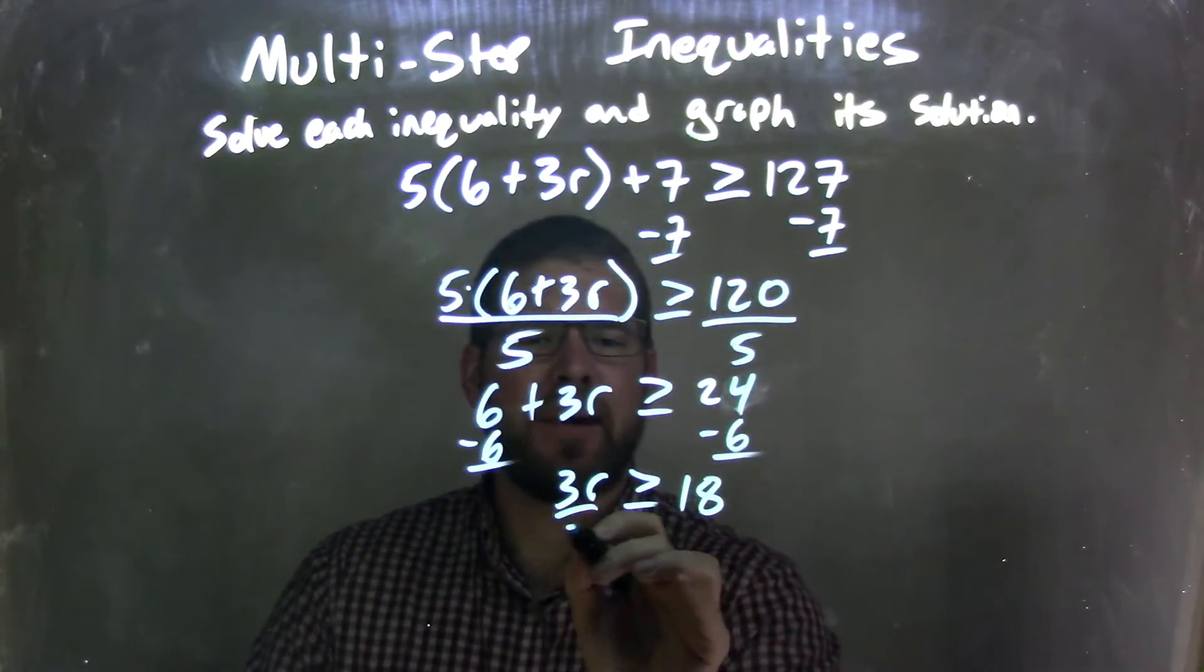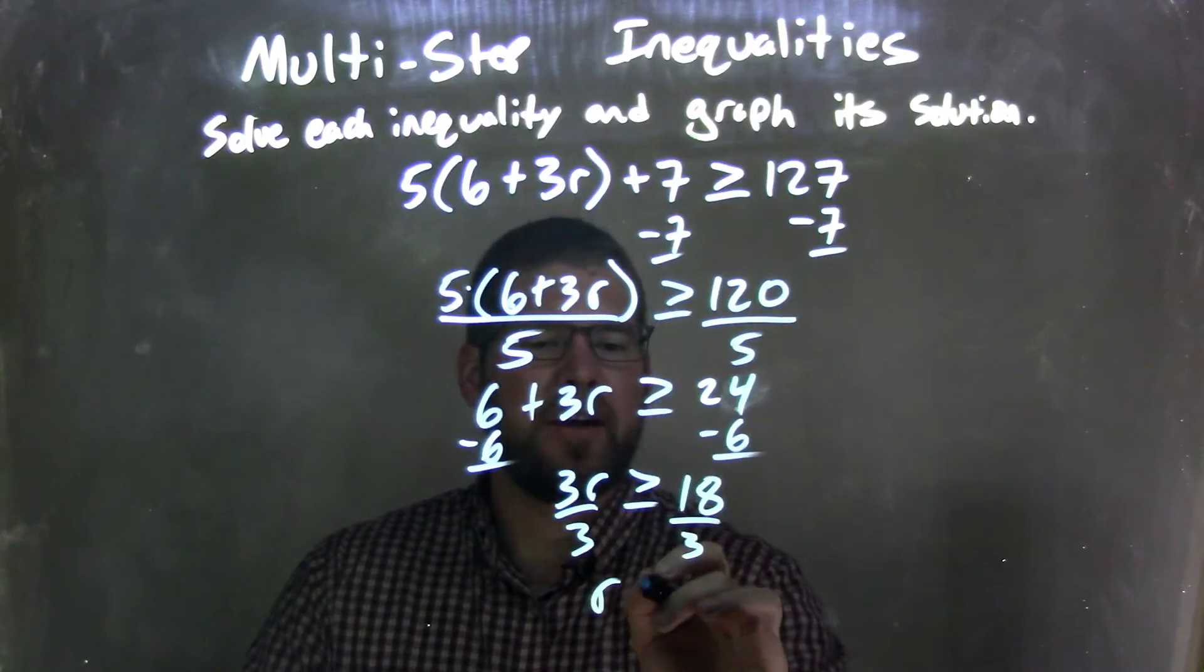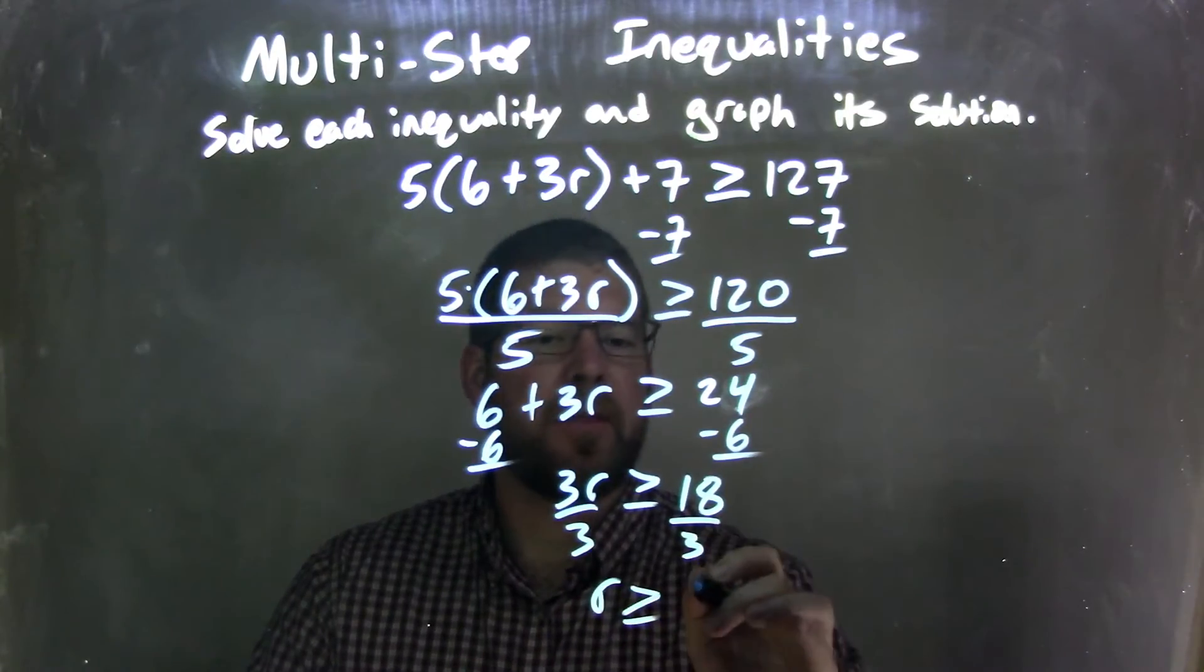18, now divide by 3 on both sides, leaves me R by itself here, is greater than or equal to 18 divided by 3, which is 6.